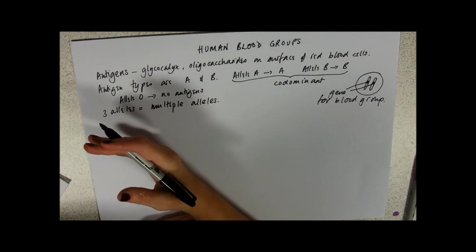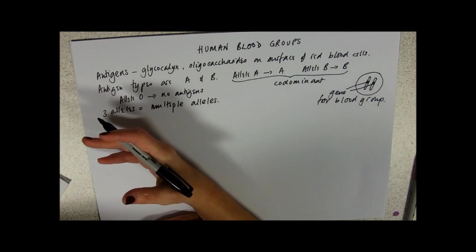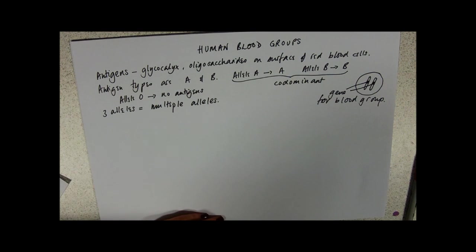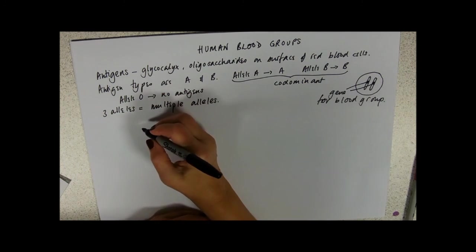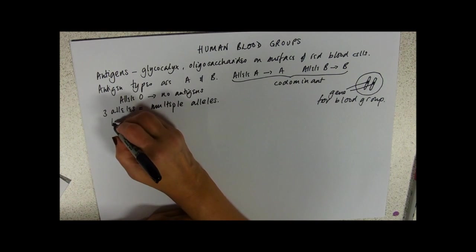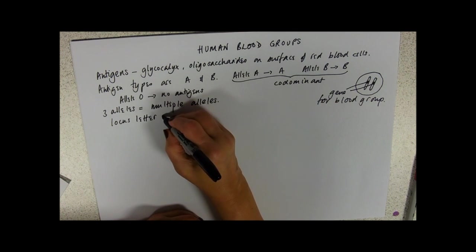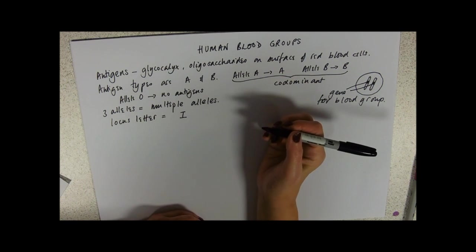We give them a locus letter. So if you were looking at multiple alleles for flower color, you might be calling the locus letter F. It just states what position, that they're at the same position. For blood groups, the locus letter to let you know that they're at the same locus and not on different chromosomes, and on the same chromosomes you can only have two, is the letter I.